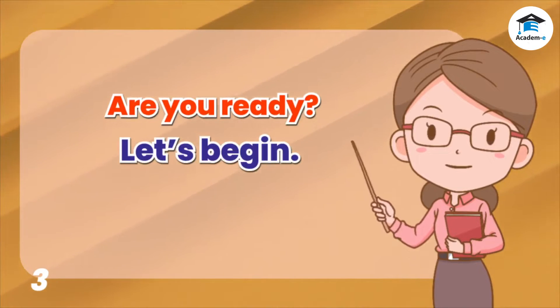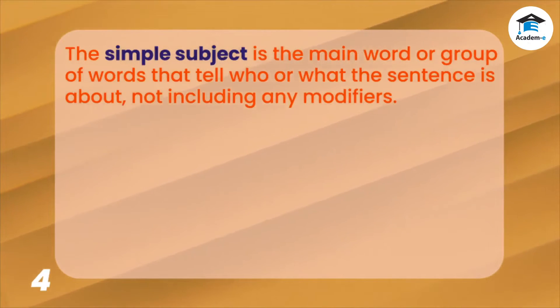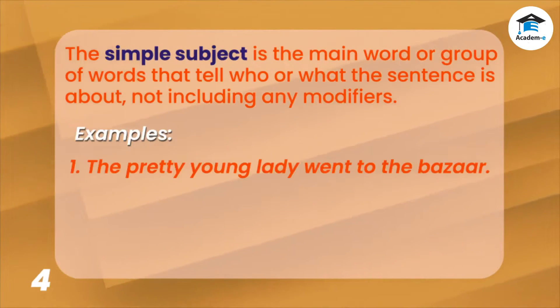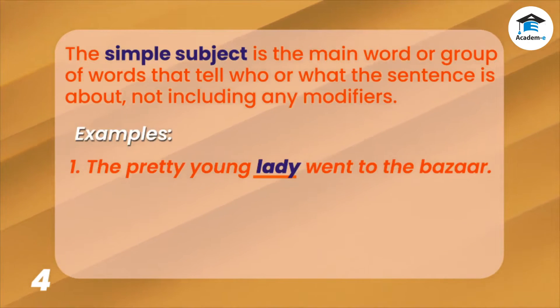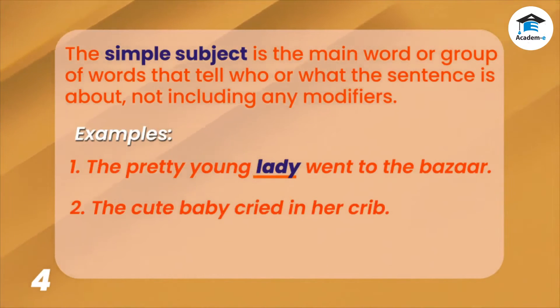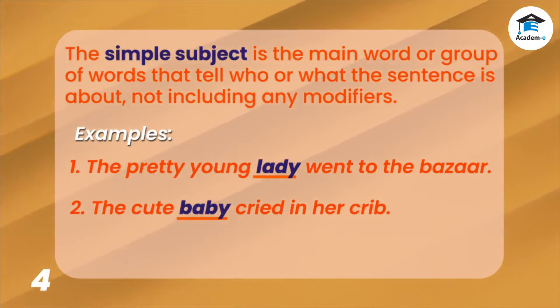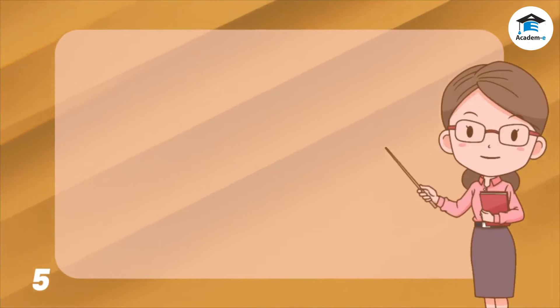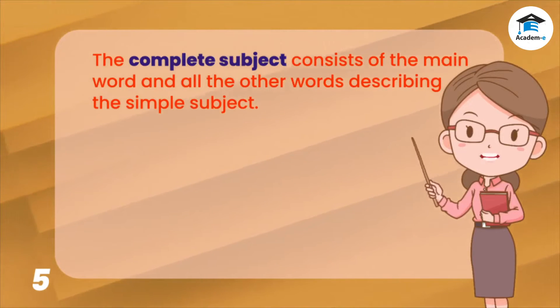The simple subject is the main word or group of words that tells who or what the sentence is about, not including any modifiers. Let's analyze these examples. One: 'The pretty young lady went to the bazaar.' In this sentence, the simple subject is 'lady.' Two: 'The cute baby cried in her crib.' In this sentence, the simple subject is 'baby.'